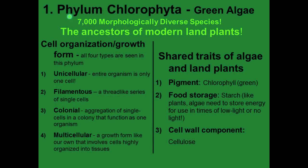Let's take a look at Phylum Chlorophyta in detail — these are the green algaes. There are 7,000 morphologically diverse species, and these are the ancestors of modern land plants. They have four types of cell organization and growth form: unicellular (the entire organism is one cell), filamentous (a thread-like series of single cells), colonial (an aggregation of single cells functioning as one organism), or multicellular (cells highly organized into tissues, like our own).